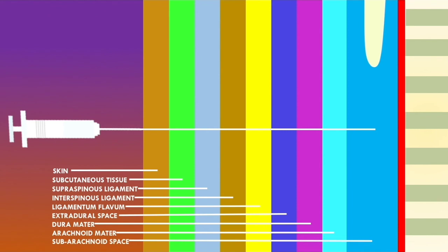The subarachnoid space contains the cerebrospinal fluid, which is why this is the final destination of the lumbar puncture. These are the different layers through which a lumbar puncture must penetrate before it reaches the subarachnoid space and extracts the cerebrospinal fluid. And that is a summary of the anatomy of a lumbar puncture.